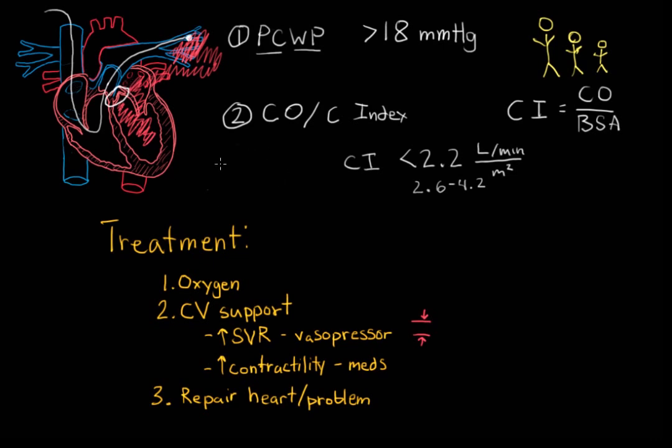Remember, in cardiogenic shock the issue is the heart itself is not pumping and does not squeeze enough to allow blood flow to go forward. This results in poor oxygen delivery to the rest of the body.